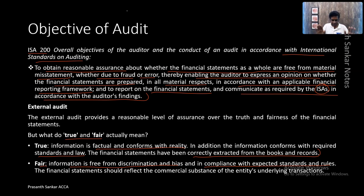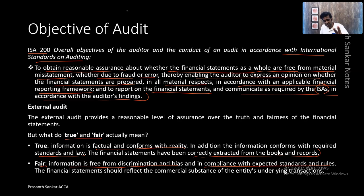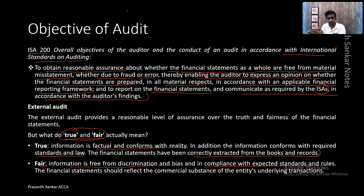Fairness means you should not show any discrimination to the rule and regulation. You cannot say that this particular expense — I'm going to bend the rules and capitalize it. Only if a transaction conforms to reality, meaning we have evidence to prove the transaction has occurred, and it has occurred as per the relevant accounting standards, we can say that the transaction is true and fair. This is what an auditor tries to achieve — gathering all necessary evidence to prove the transaction is true and fair. When he fails to do so, his opinion changes from an unmodified opinion to a modified opinion.